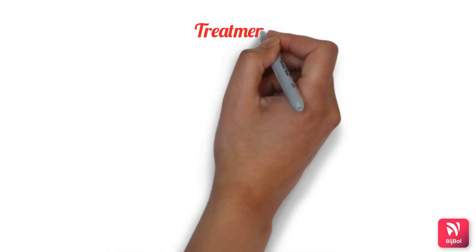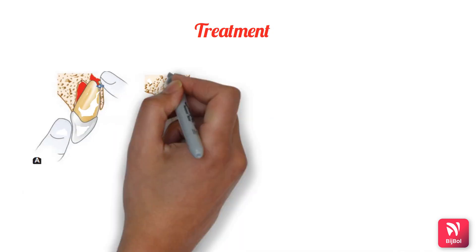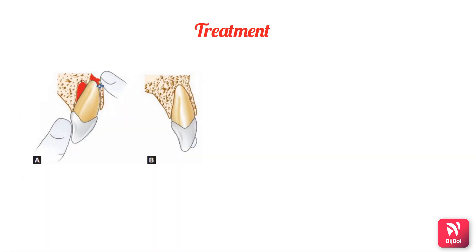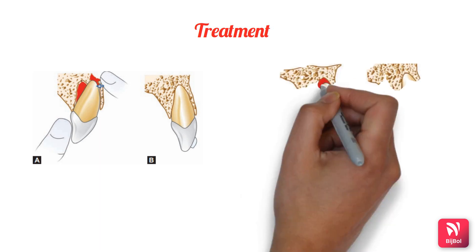Repositioning the laterally luxated tooth requires minimal force. Anesthesia is administered, and the tooth must be dislodged from the labial cortical plate by moving it coronally and then apically. The tooth is first moved coronally out of the buccal plate and bone, then fitted into its original position.